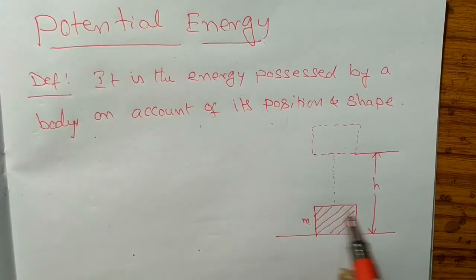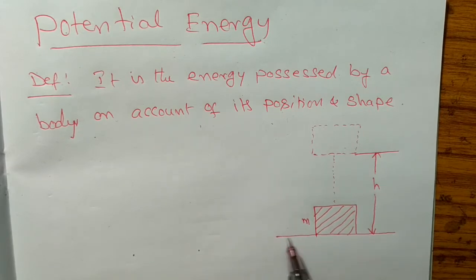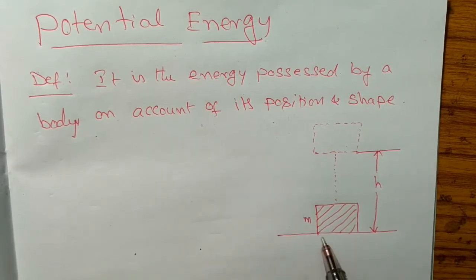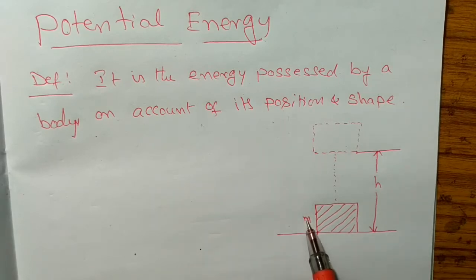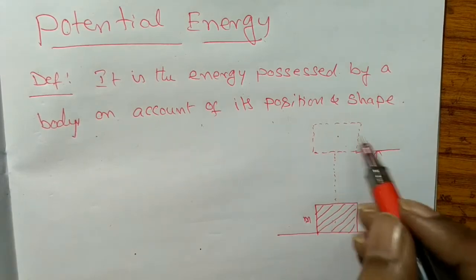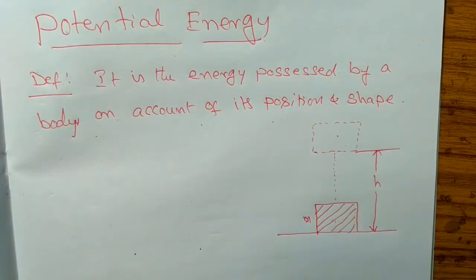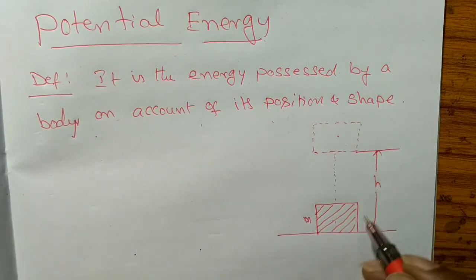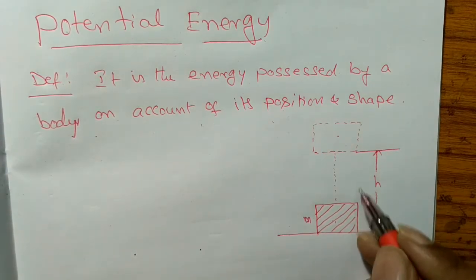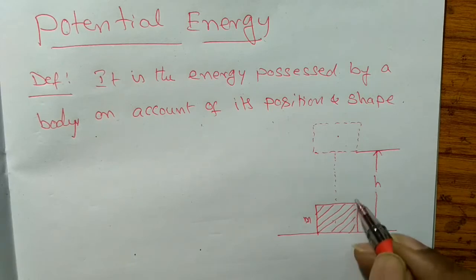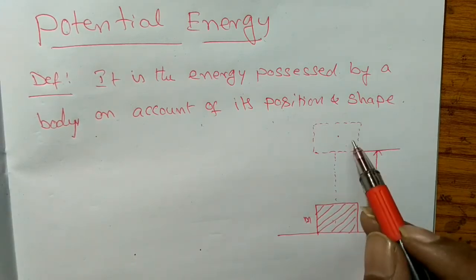Suppose a body of mass m is above the ground. This is the ground level. The body is subject to gravitational force, and against the gravitational force we lift the body upward.